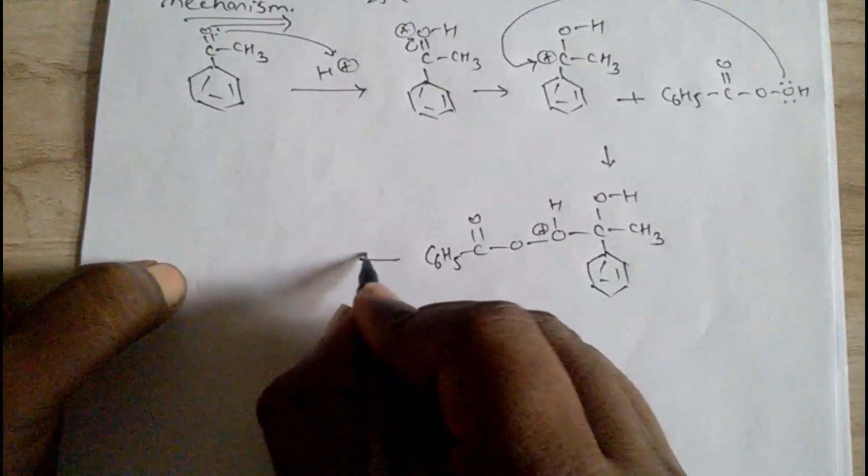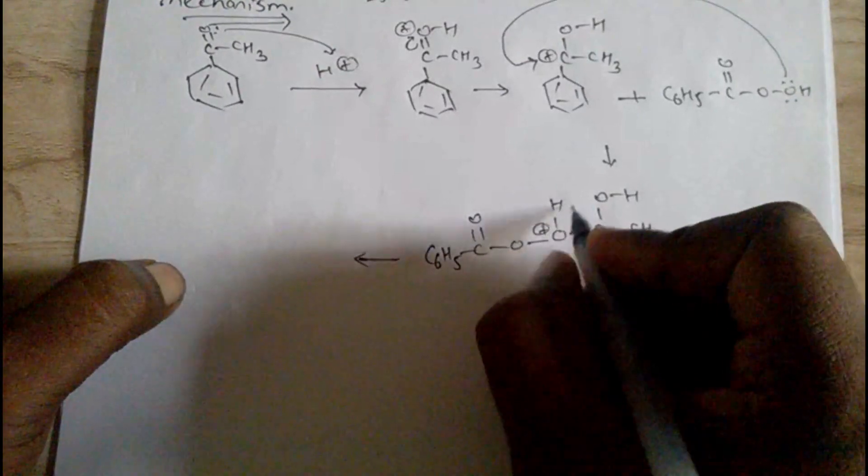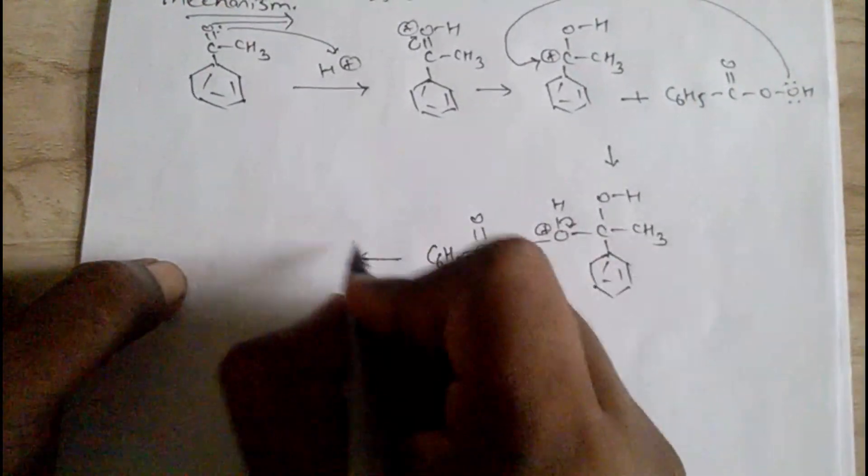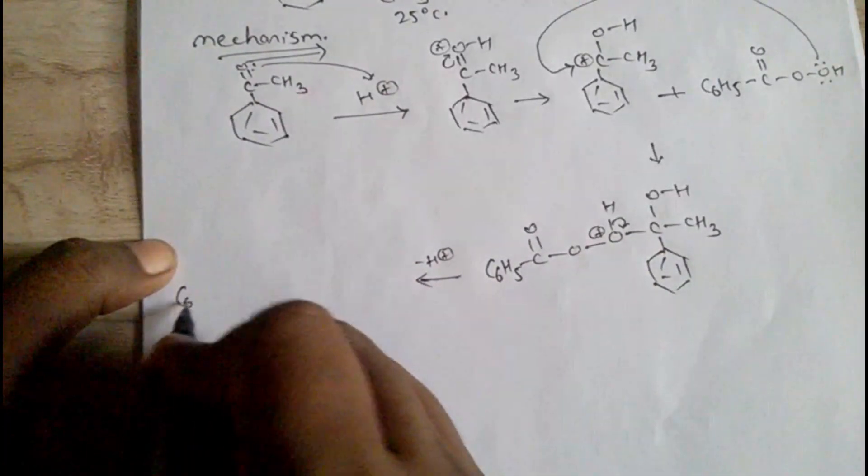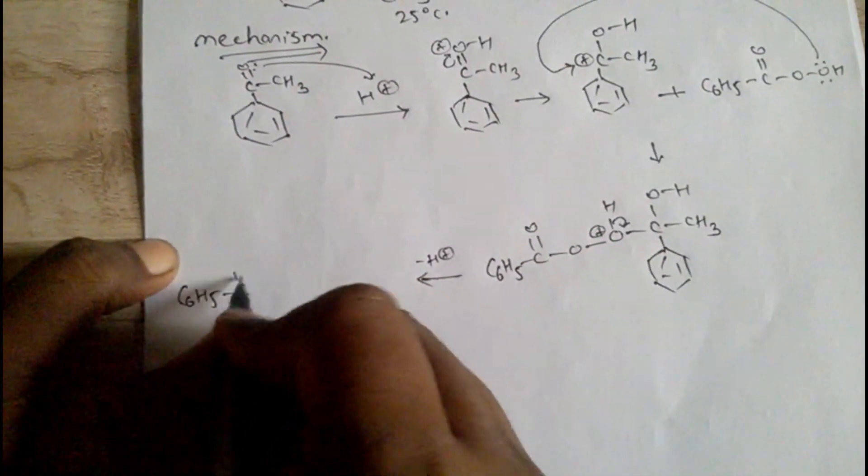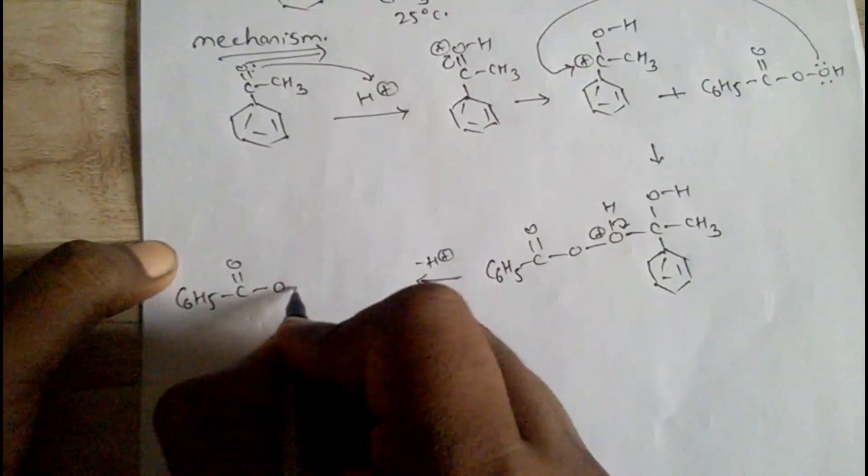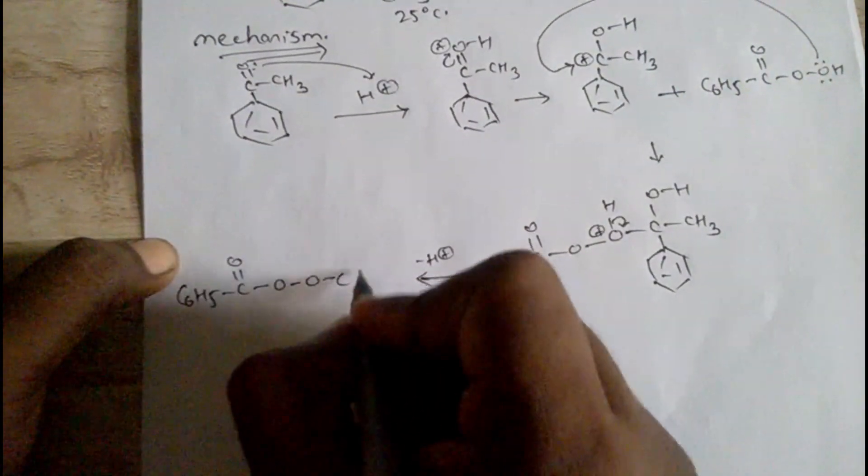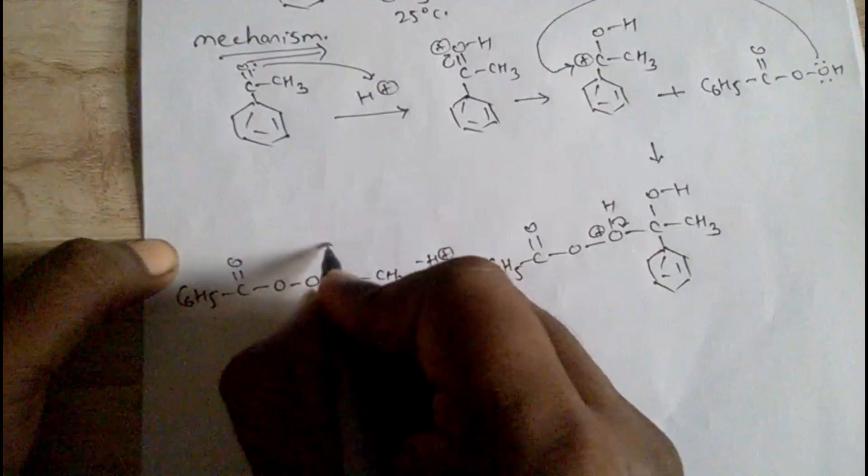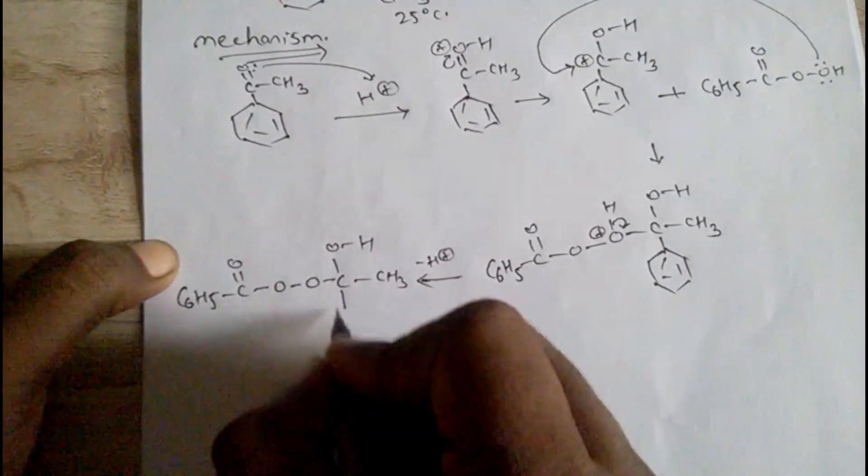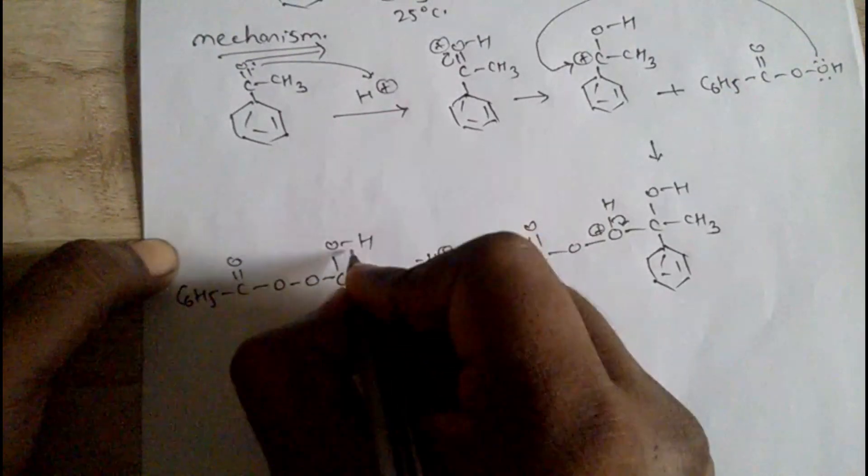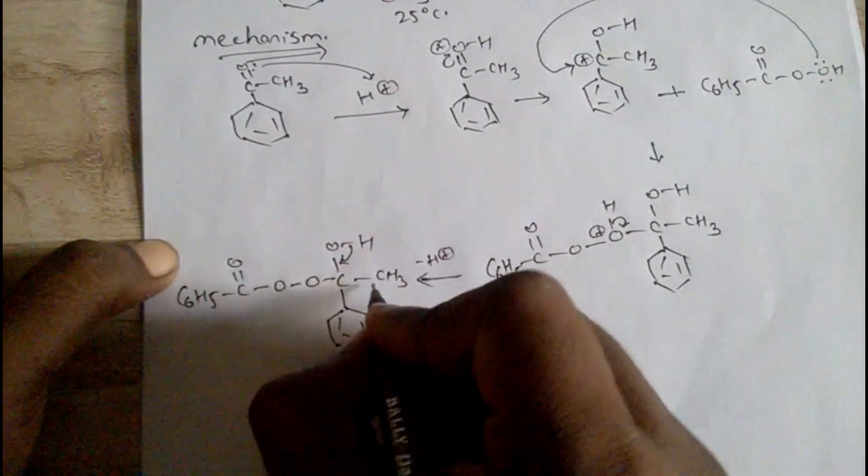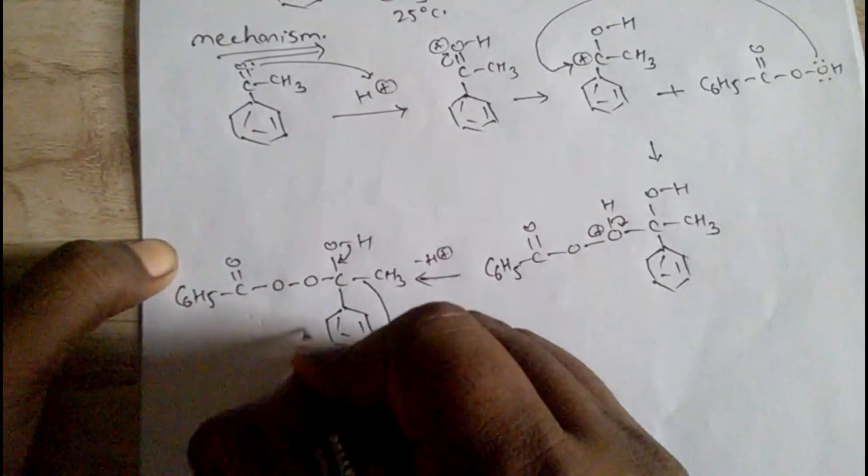Here this oxygen becomes a positive charge C6H5. Now in this step, this bond will shift here to oxygen and H plus will release and we get a structure C6H5 C double bond O single bond O single bond O C CH3 OH. This here benzene ring, this bond shifts here and this bond migrates here.